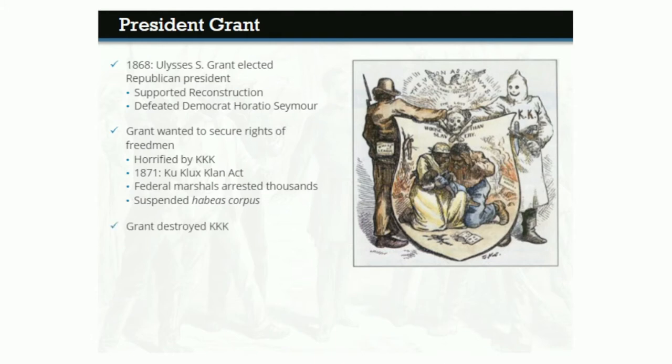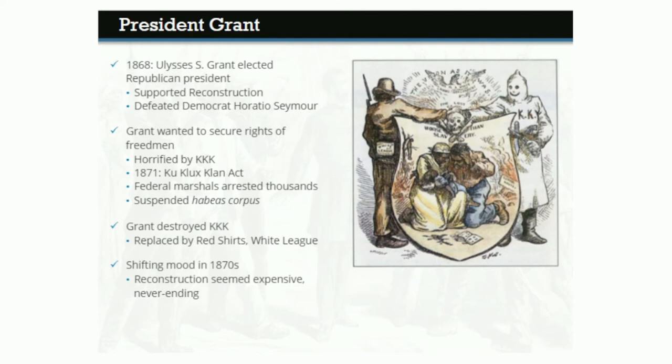Grant's strong actions virtually destroyed the original KKK, but it was quickly replaced in the South by other white supremacist groups, like the Red Shirts and the White League, dedicated to suppressing the black vote. By the 1870s, the mood of the nation and of the Republican Party had shifted significantly. Few Republicans still called themselves radicals, and many moderates had come to view Reconstruction as an expensive, never-ending quagmire.